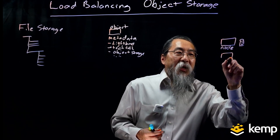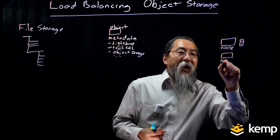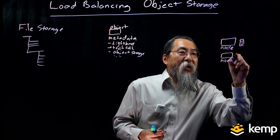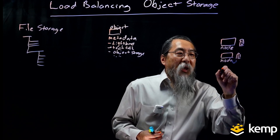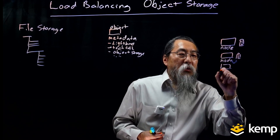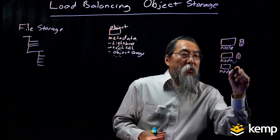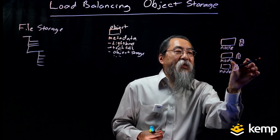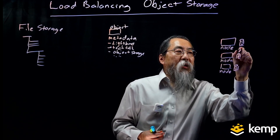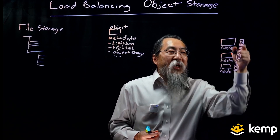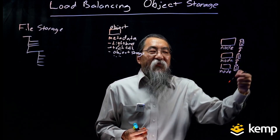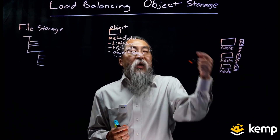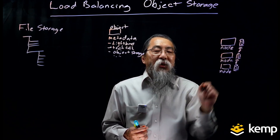Now the cool thing is I can scale by adding more nodes — I can add another node, and I'm going to add a third node. These nodes communicate with each other because they're all within the same system. They talk to each other and share this flat file system with all the objects, so I can connect to any node and push or pull any object no matter which node it sits on.